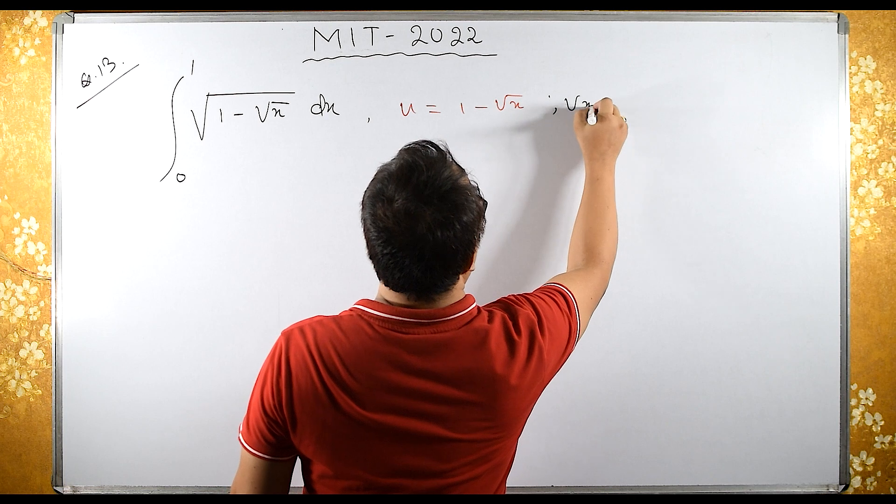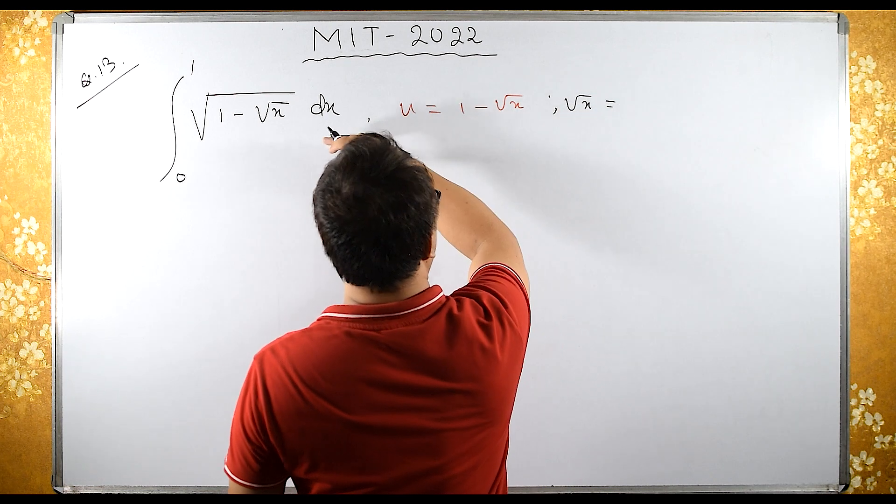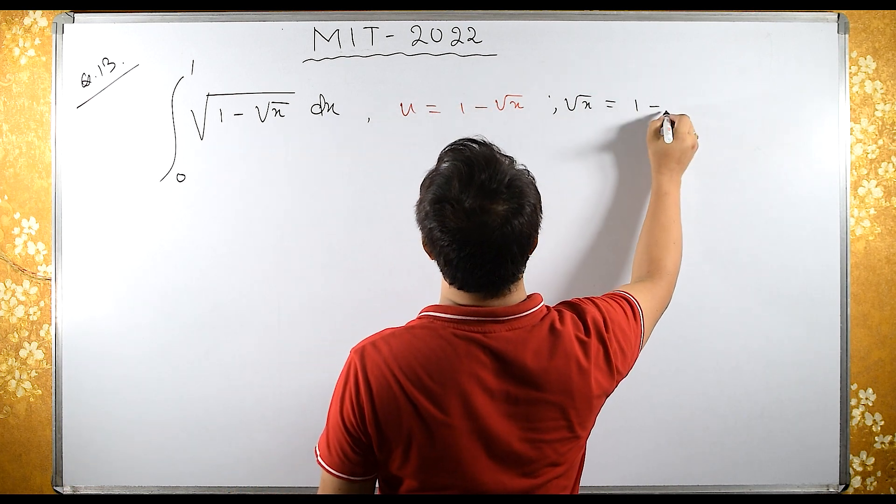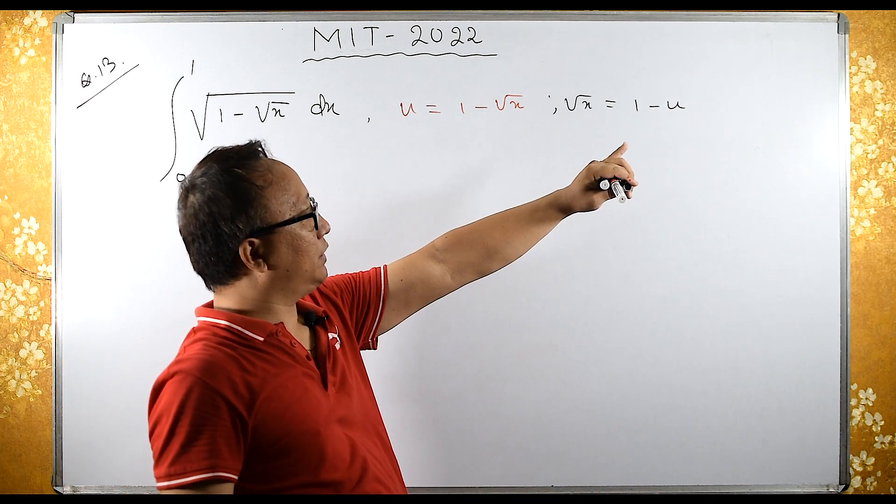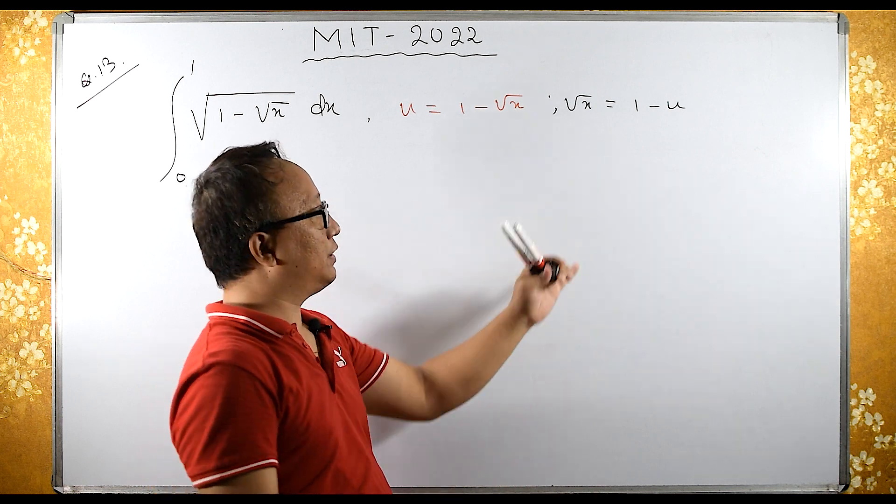From here, what is root x? Root x equals, if I send this side, it becomes 1 minus u. To remove the square root, I need to square both sides.